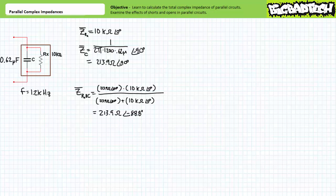Given that negative 88.8 degrees is very close to negative 90 degrees, this non-ideal capacitor is still primarily capacitive. However, the angle shows it's slightly out of whack and not perfectly vertical anymore. Importantly, one must remember that the resistive and capacitive portions of this non-ideal capacitor are entirely inseparable, meaning the whole capacitor always represents a complex impedance of 213.9 ohms at an angle of negative 88.8 degrees at 1.2 kilohertz.